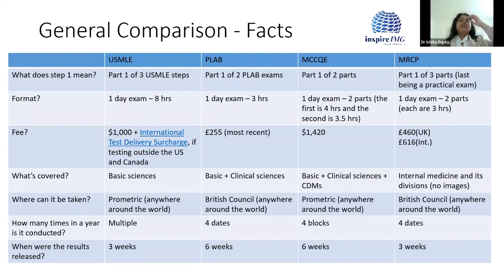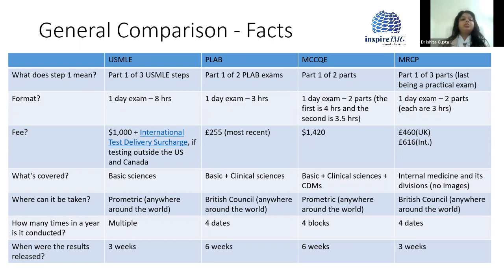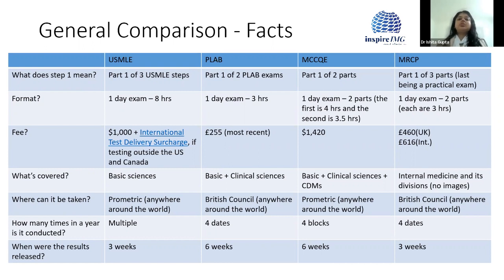Now talking about the format of each exam — you might think they're testing the same things, but they have very different formats and fee structures. All of them are one-day exams. USMLE is an eight-hour exam: seven hours of testing plus one hour of break time. PLAB is a three-hour exam, 180 minutes. QE1 is actually a two-part exam within the day — part one is four hours and part two is three and a half hours. The Royal College exam is also a one-day exam with two papers — paper A and paper B — each three hours, with a short break in between.